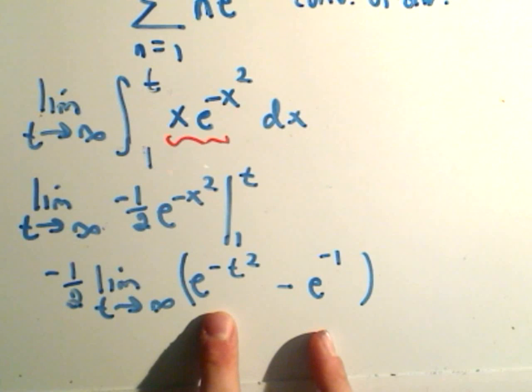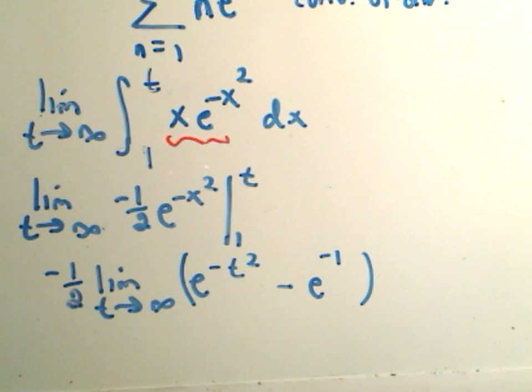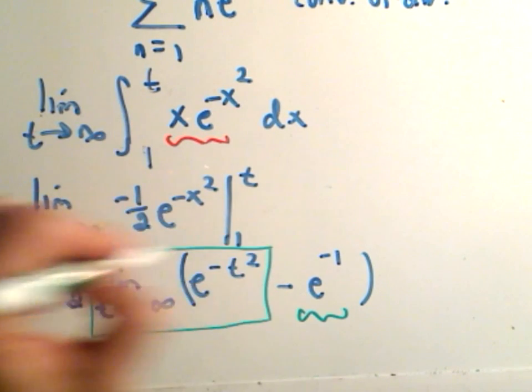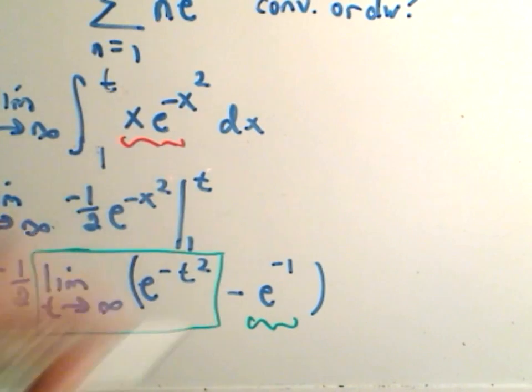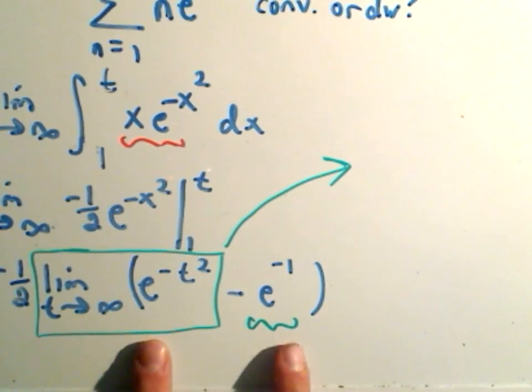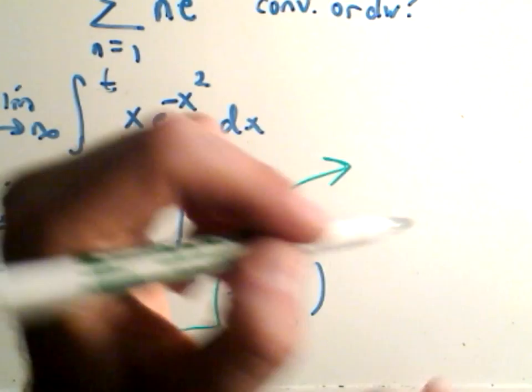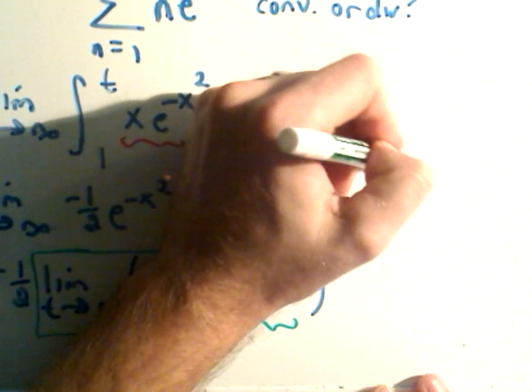Minus, when I plug in 1, I'll get e to the minus 1. So again, I'm just pulling the negative 1 half out front, plugging the t in, plugging the 1 in. Well, again, if this integral is convergent, that means it equals some finite number, then the series also converges. e to the negative 1st is just a constant. So I'm really not worried about that part. I'm just really kind of interested now in what happens to the limit as t goes to infinity of e to the negative t squared. Because if that's a number, it'll all turn out to be a number, which means it's convergent. If this goes to infinity or negative infinity, well, who cares? If you're subtracting away a finite number, it'll be infinite, and that means it diverges.